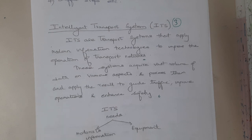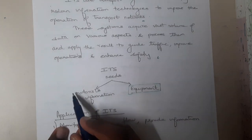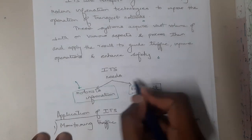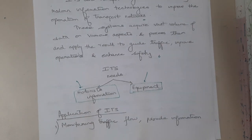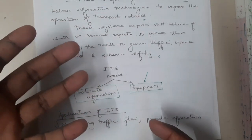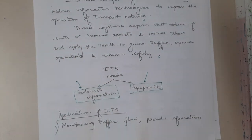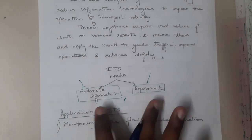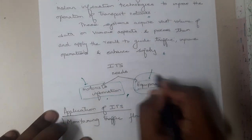Intelligent Transport Systems have basic needs: equipment and information. Equipment refers to devices and gadgets — for example, a traffic sensing system needs cameras, image processing capability, servers to process data, and associated hardware. Information refers to the data that needs to be collected, such as images. These are the basic needs of ITS, and if a two-mark question is asked, you can write about these.